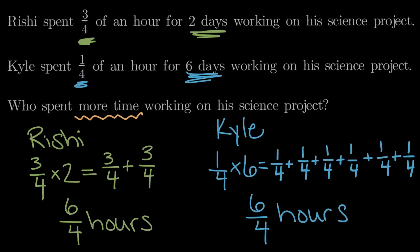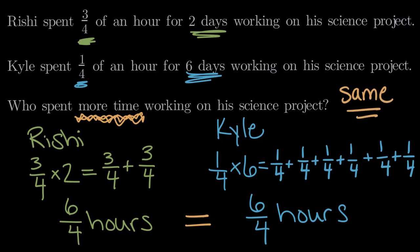Now back to our question. Now that we know how much each of them spent — Rishi six-fourths hours and Kyle six-fourths hours — who spent more time working on his science project? The answer, of course, is that these are equal. Rishi and Kyle spent the same amount of time working on each of their science projects.